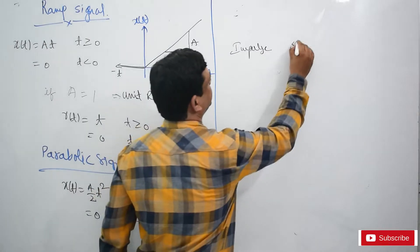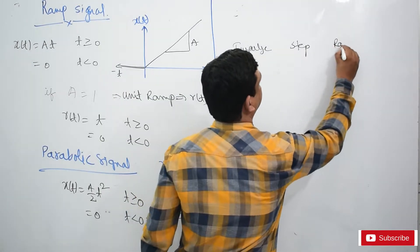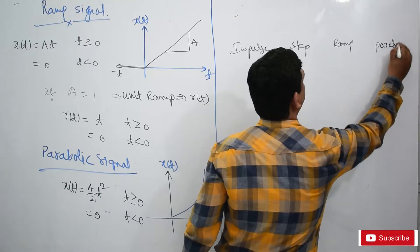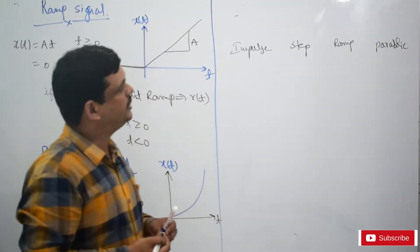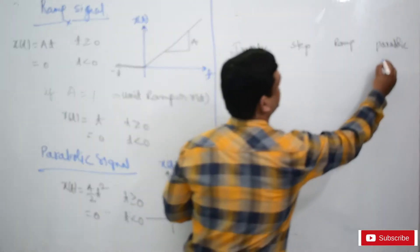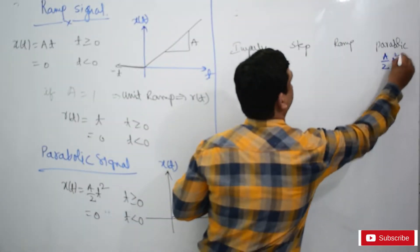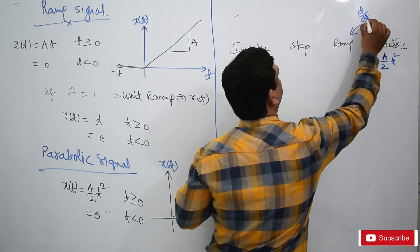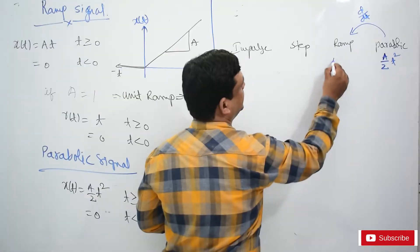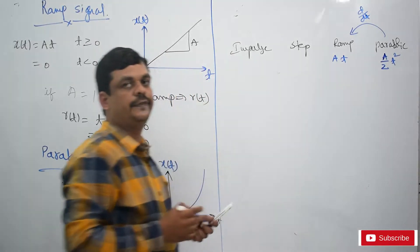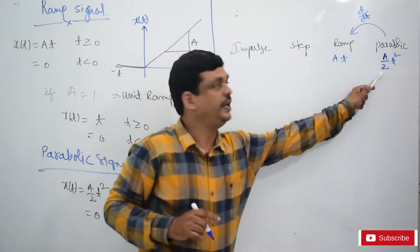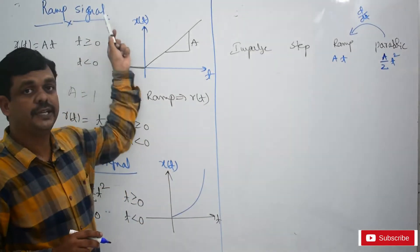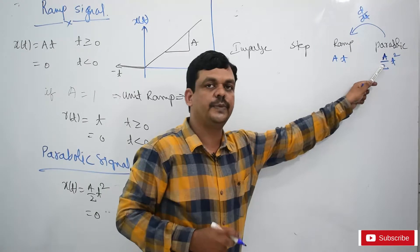Parabolic signal representation, the equation is a by 2 into t square. Differentiation of this function is d by dt. So differentiation of this is at. Differentiation of a by 2 t square: a by 2 t square differentiation is 2t, the 2 cancels, giving at. At is the ramp signal equation, so differentiation of parabolic becomes ramp signal.